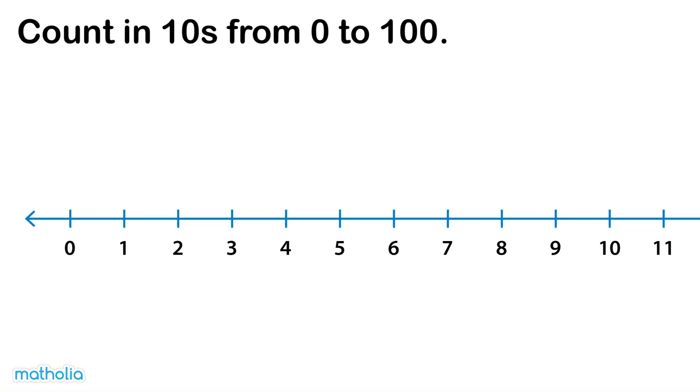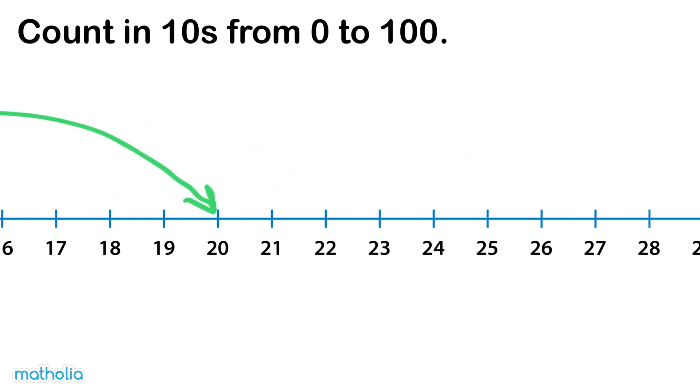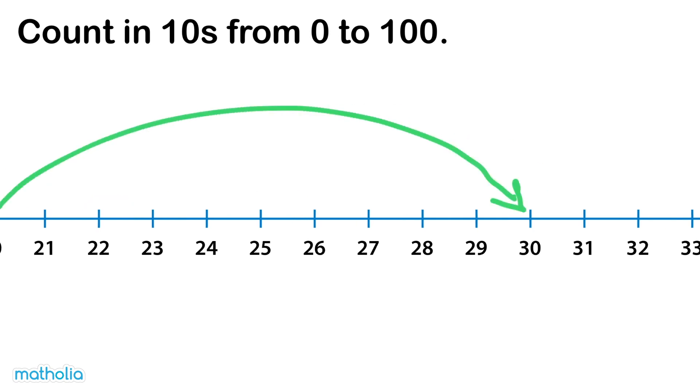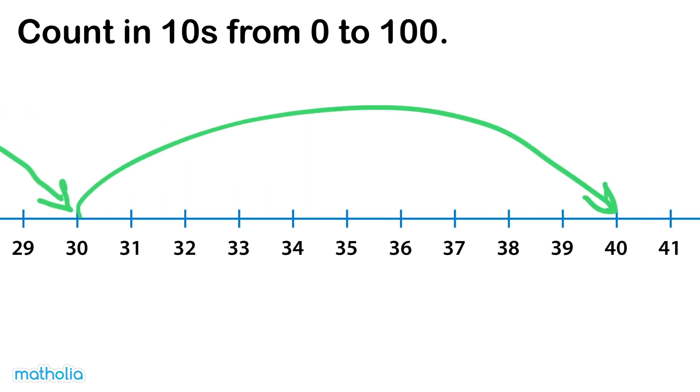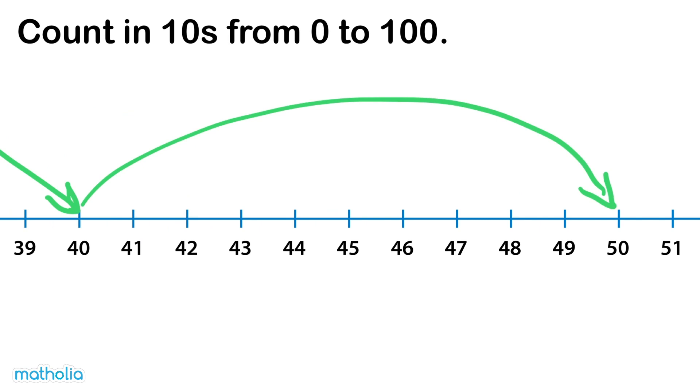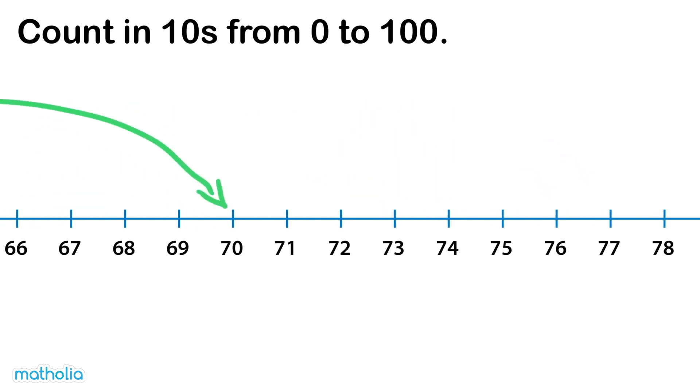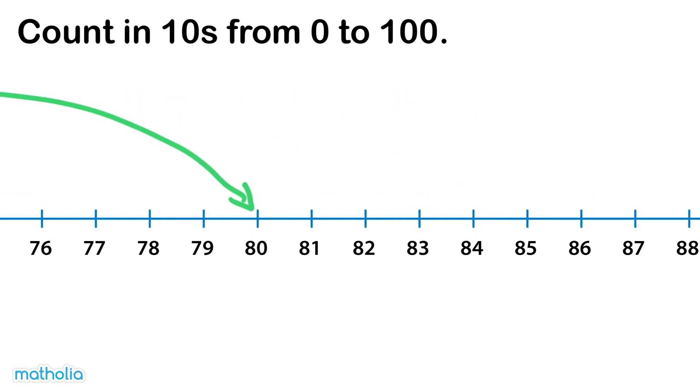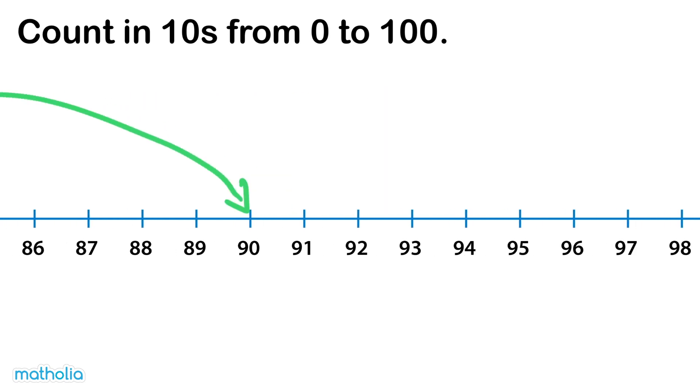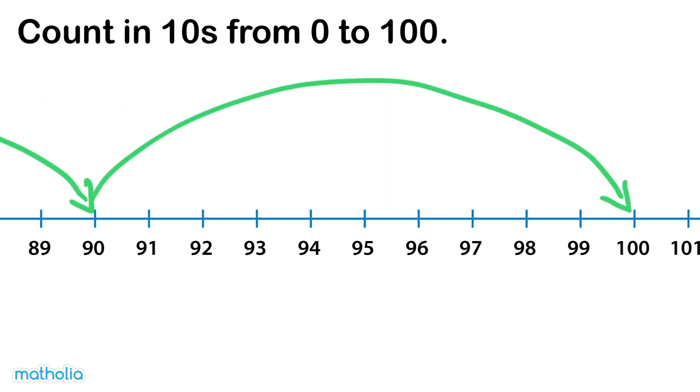Counting tens from zero to 100. Let's use the number line to count in tens: zero, ten, twenty, thirty, forty, fifty, sixty, seventy, eighty, ninety, one hundred.